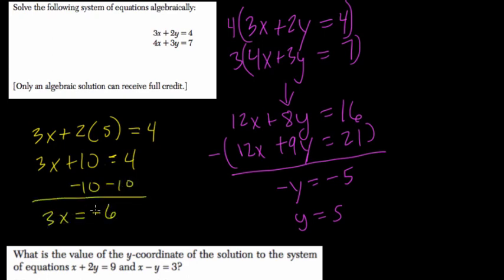Divide by 3 and x equals negative 2. So our solution, the point where they meet, is negative 2, 5.